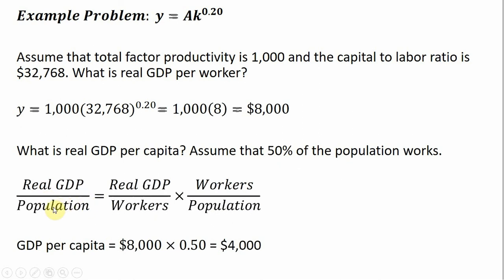Real GDP divided by the population, that's real GDP per capita. And that's set to equal real GDP divided by the number of workers multiplied by the number of workers divided by the population. This is really an identity.